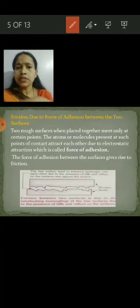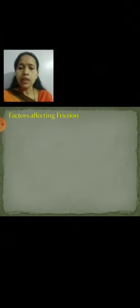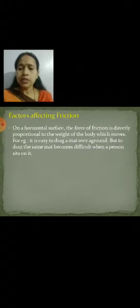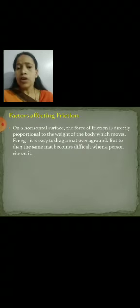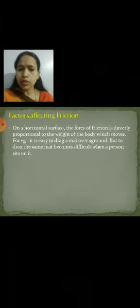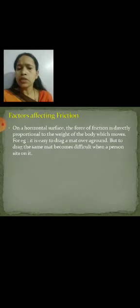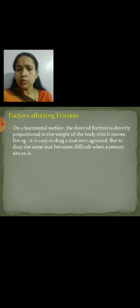Now, factors affecting friction. First is weight. On a horizontal surface, the force of friction is directly proportional to the weight of the body which moves. For example, you can easily drag a mat over the ground, but when a person is sitting on the mat you are not able to pull it properly — you have to put in more effort.